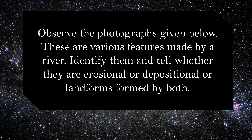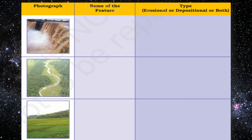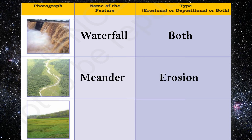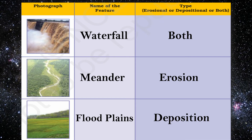Observe the photographs given below. These are various features made by a river. Identify them and tell whether they are erosional, depositional, or both. This is a waterfall — caused by both, because it erodes the upper part and deposits below. This is a meander, which involves erosion. These are floodplains, which are made by deposition.